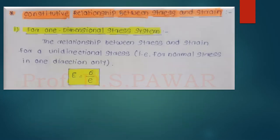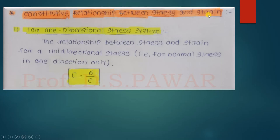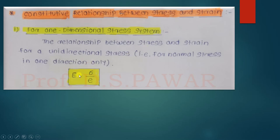Next is the constitutive relationship between stress and strain. We have seen what is meant by strain and stress and various technical terms in mechanics of solids. Stress is force per unit area, and strain is the ratio of change in length to original length. The relationship between them depends on which type of dimensional system we are using. For a one-dimensional stress system, where we consider only unidirectional stresses — that is, normal stress in one direction only — the stress-strain relationship is simply E equals stress divided by strain.